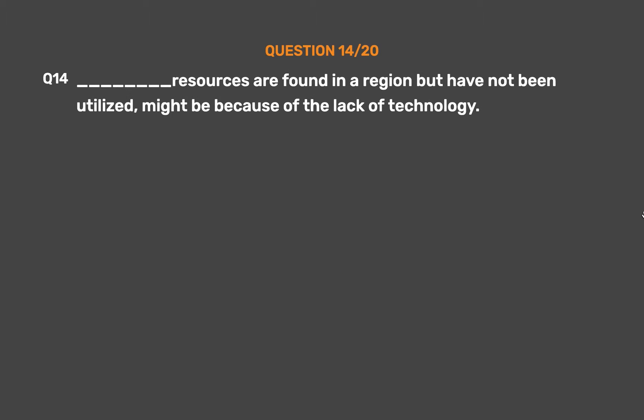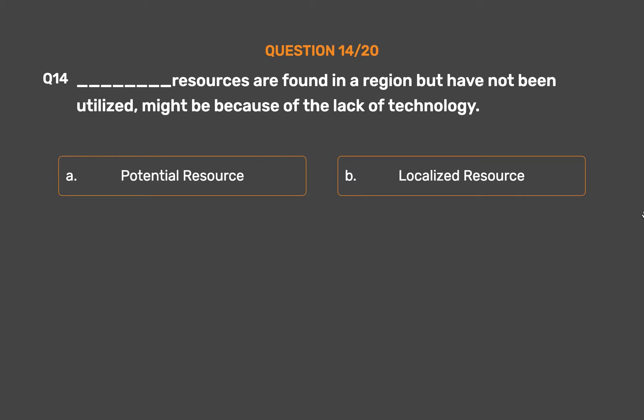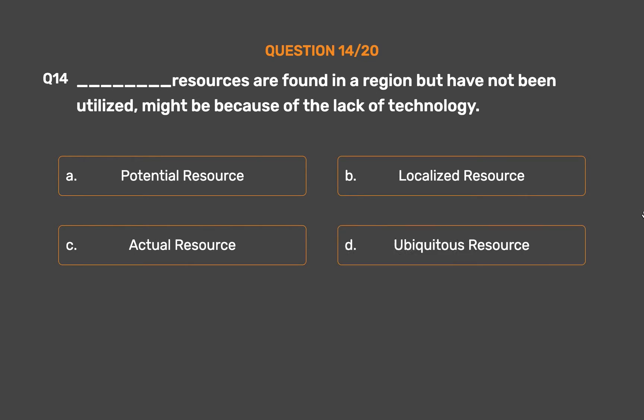Question number 14. ___ resources are found in a region but have not been utilized, possibly because of the lack of technology. Option A: Potential resource. Option B: Localized resource. Option C: Actual resource. Option D: Ubiquitous resource.